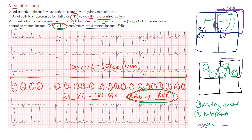In our course we discuss Ashman phenomenon, where we have aberrantly conducted beats — essentially a functional right bundle branch block that can occur due to a long refractory period. We go over that in the course; we won't get into it here, but maybe a separate lecture will cover that.